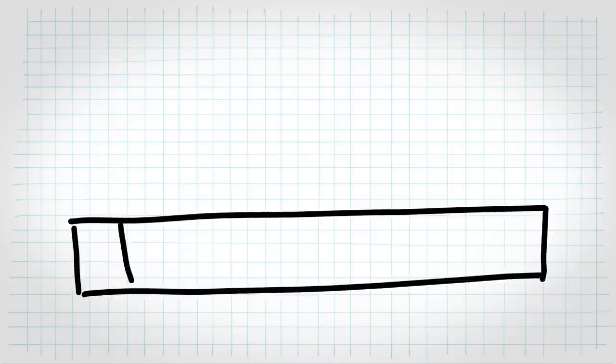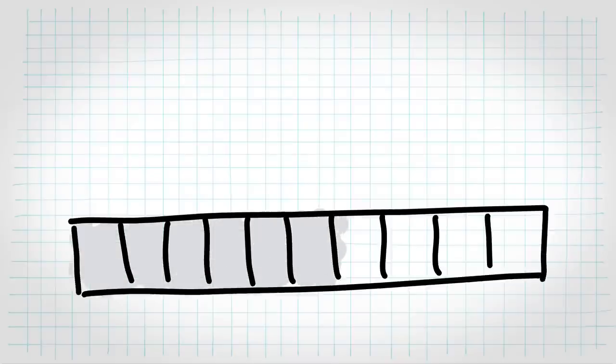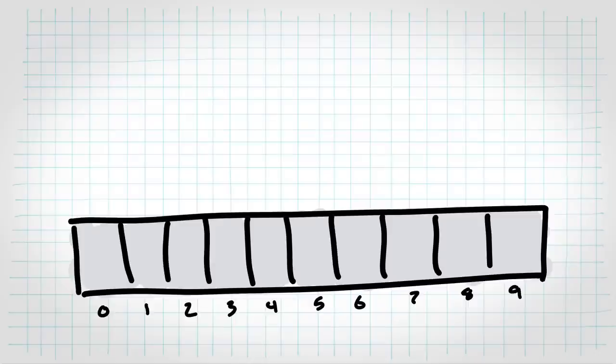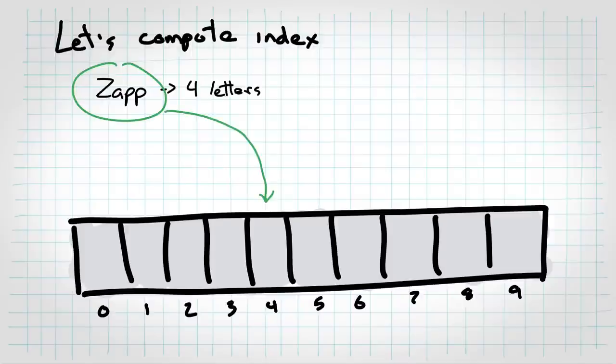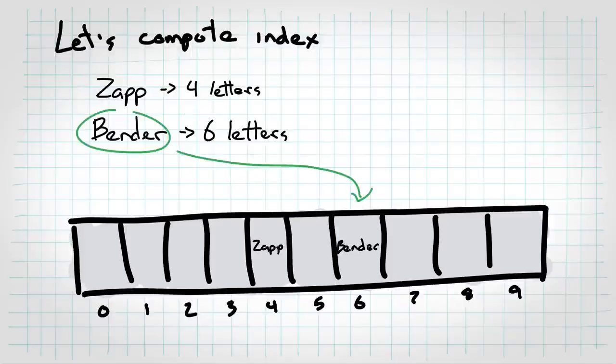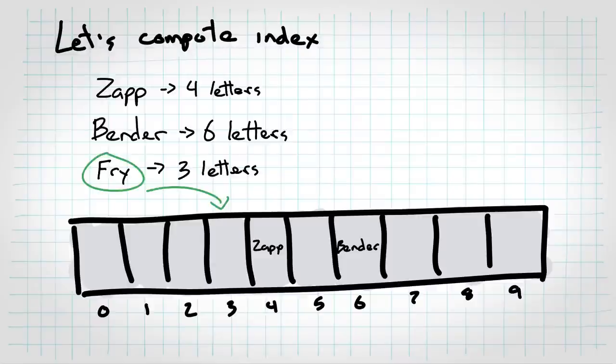Instead, let's try to compute our own array index using something called a hash function. And this can be literally anything, but let's do something super stupid. We'll take the name and I'll just take the length of the name. But you can easily see now where they go in the array. And it doesn't matter what order I insert them in, because we computed our own array index.